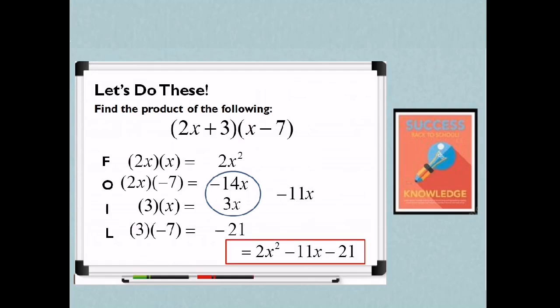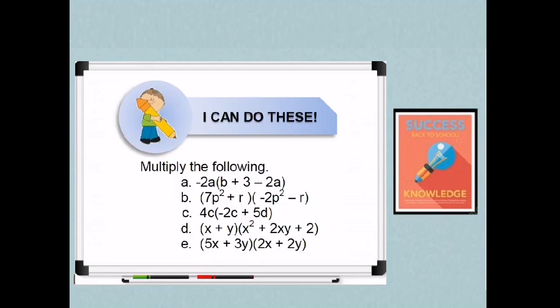So that concludes our lesson regarding multiplying polynomials using distributive property and using the FOIL method. So it's your time to get your pen and paper to do your activity. So have fun learning. So I can do this. Multiply the following.